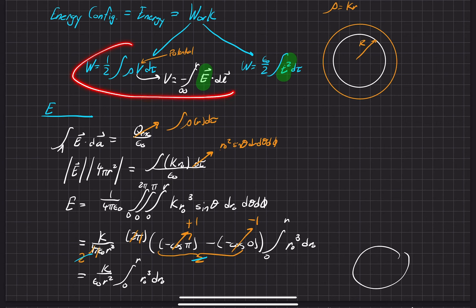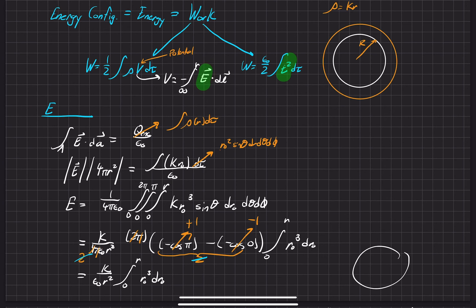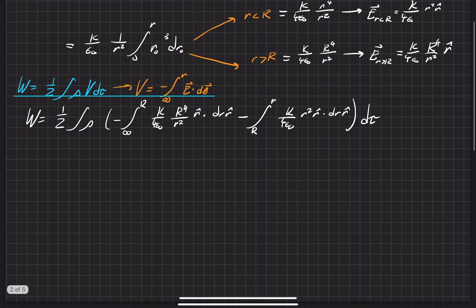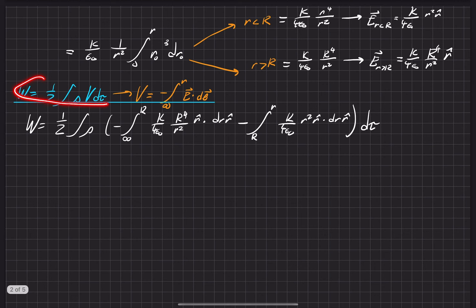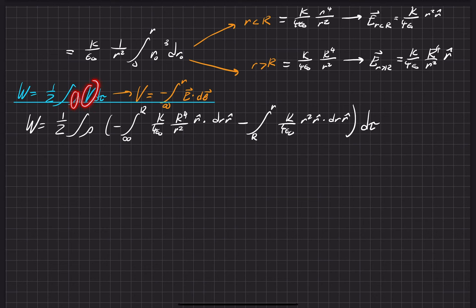We're going to use the electric field we found in the first part of the video to find the electric potential, and then use that electric potential to find the work. Here's the expression to find the work using the electric potential and the charge density, which we found, and then the electric field, which we found above.